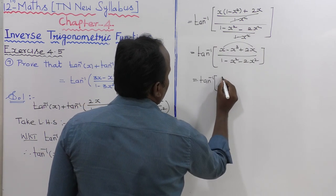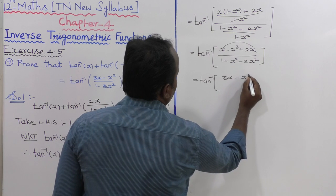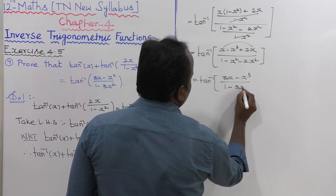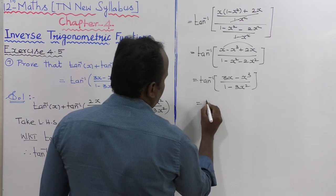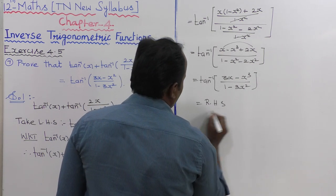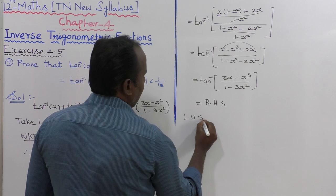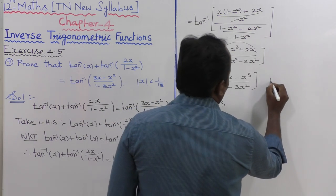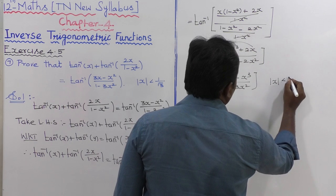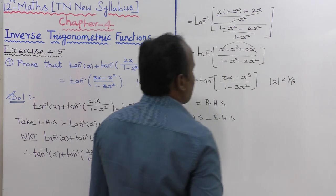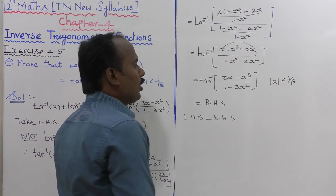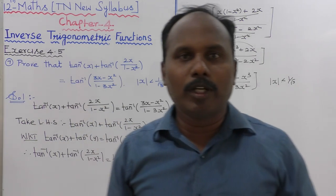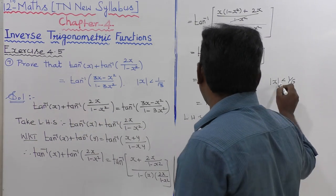That simplifies to tan inverse of 3x minus x cubed, whole divided by 1 minus 3x squared, which is equal to the RHS. Therefore LHS equals RHS. The condition is that the modulus of x is less than 1 by root 3, meaning x lies between minus 1 by root 3 and 1 by root 3, and this condition is satisfied.